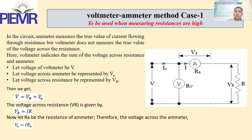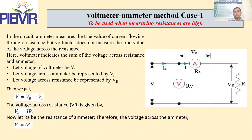We analyze this error as a relative error. In Case 1, the voltmeter is placed across the source — this is used when the measuring resistance is high. We assume the load resistance is higher than Ra. The applied voltage is V; the voltage across the ammeter is Va, and across the resistance is Vr. Let the voltmeter resistance be Rv and the internal resistance of the ammeter be Ra. The total voltage gives: V = Vr + Va.